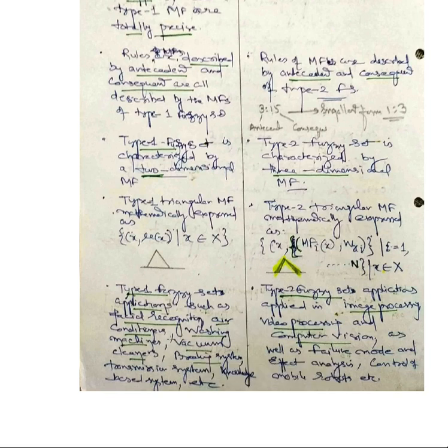The Type 1 fuzzy set applications are basically facial recognition, air conditioners, washing machines, cameras, vacuum cleaners, braking systems, automatic transmission systems, and knowledge-based systems — all these use Type 1 fuzzy set. But when you talk about Type 2 fuzzy set, its application is deeper — it is used for image processing, video processing, computer vision, failure analysis systems, robotic systems, and artificial intelligence.